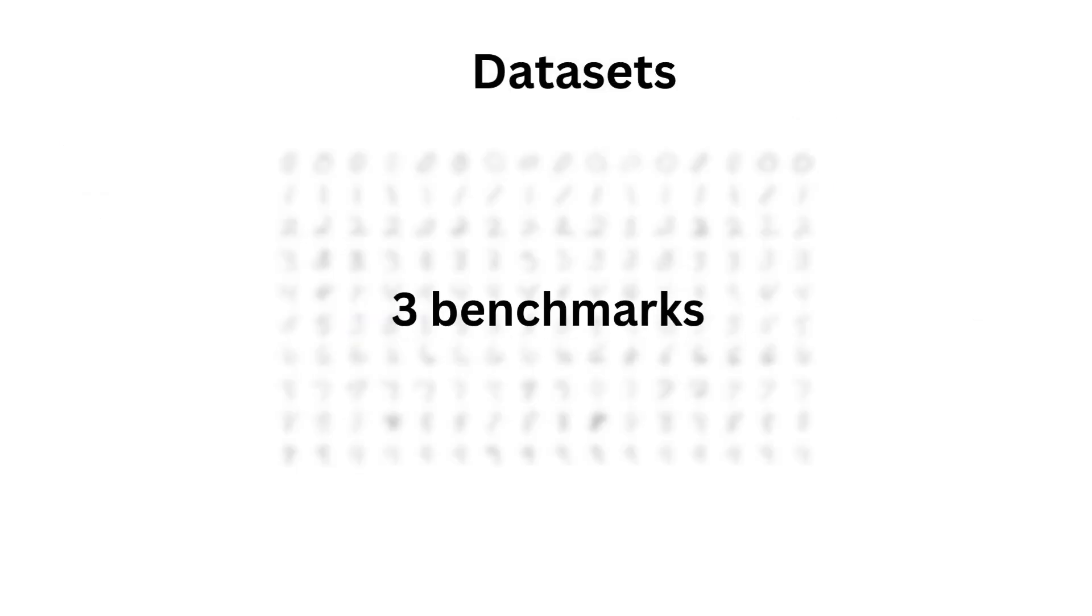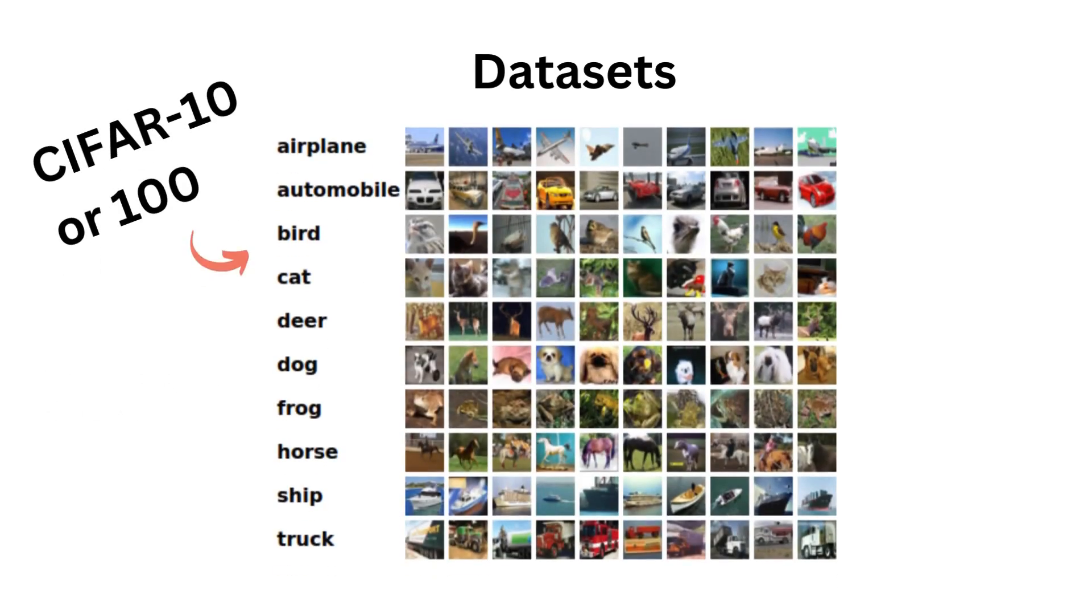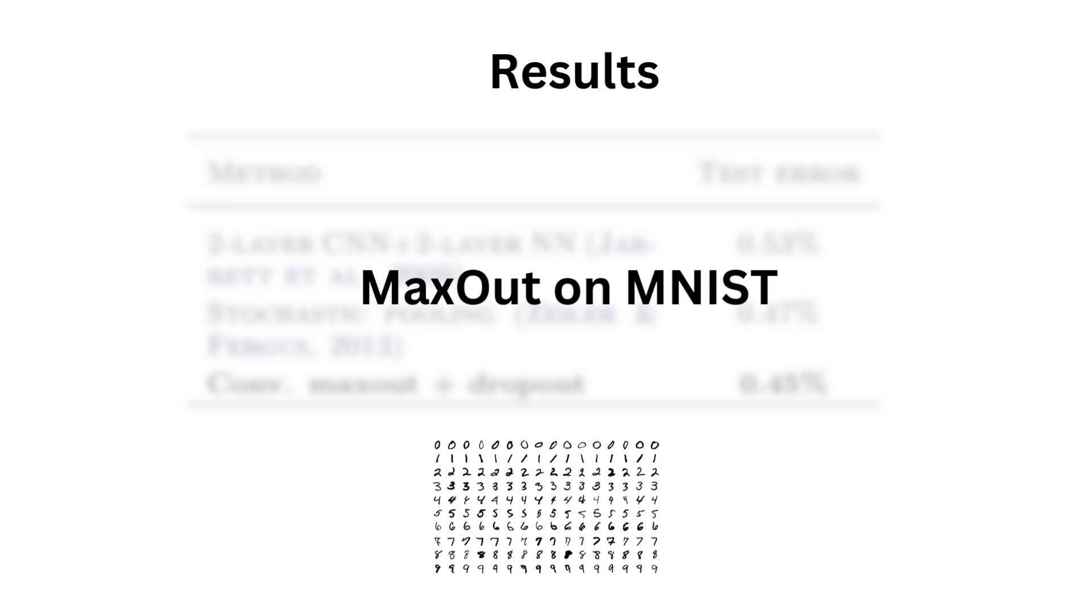Now that we know roughly how maxout works, let's look at how it performs with the three usual benchmarks. Namely, MNIST, which is a sample 10 class dataset of digits with 70,000 images. CIFAR with 10 or 100 class of 60,000 images of real world things. Finally, SVHN, which is 600,000 digits image of house numbers from Google Street View.